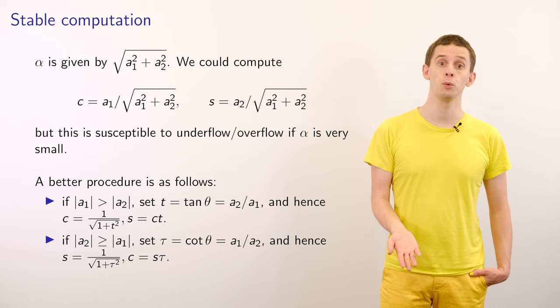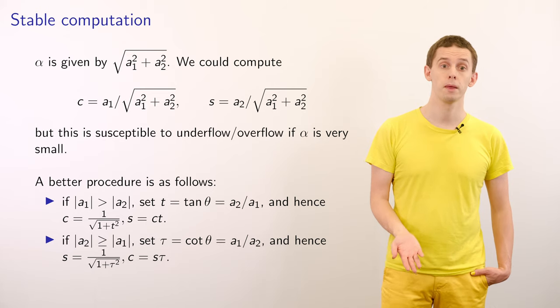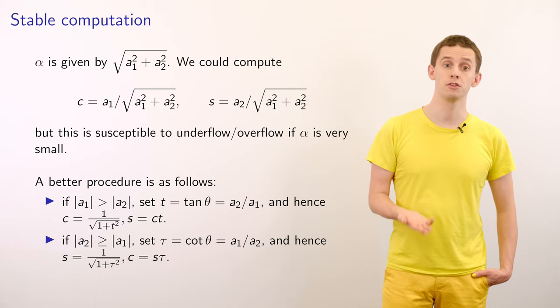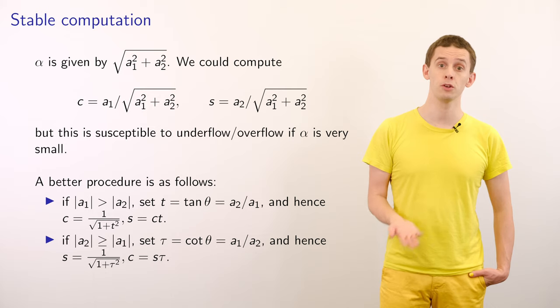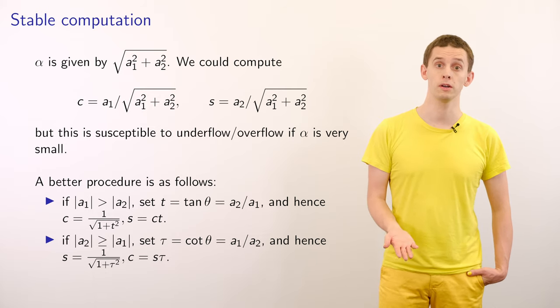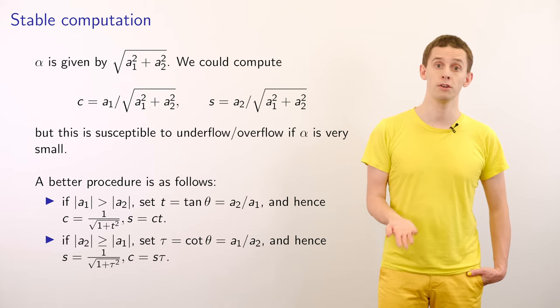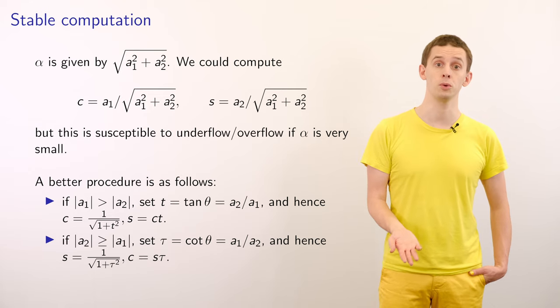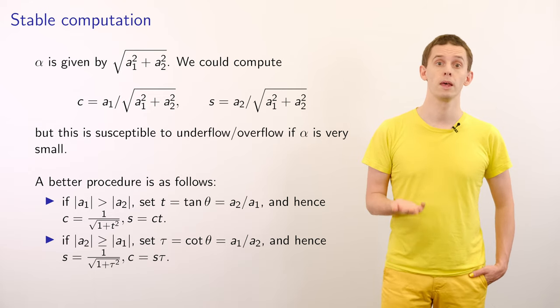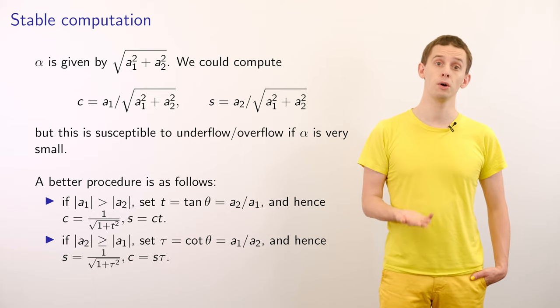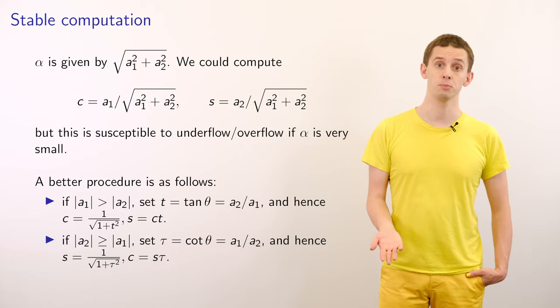Alpha is given by the square root of a_1 squared plus a_2 squared. We could compute c as a_1 divided by the square root of a_1 squared plus a_2 squared, and s as a_2 divided by the square root of a_1 squared plus a_2 squared. However, this procedure is susceptible to underflow or overflow if alpha is very small.